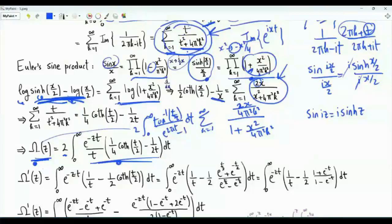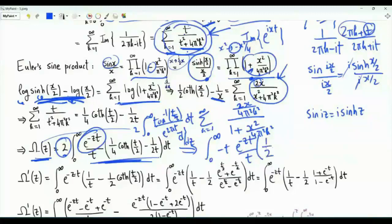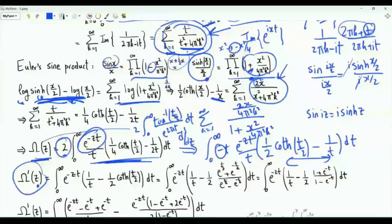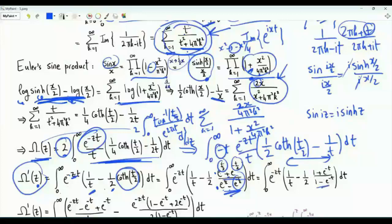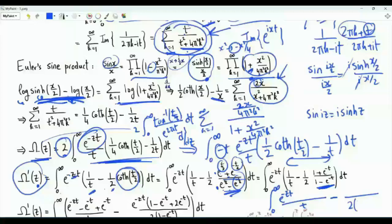The first derivative of omega with respect to z is the integral from zero to infinity of e to the minus zt times one over t minus one-half coth(t/2). Writing the hyperbolic cotangent explicitly as e to the t over two plus e to the minus t over two divided by e to the t over two minus e to the minus t over two, then multiplying numerator and denominator by e to the minus t over two, this ratio equals one plus e to the minus t divided by one minus e to the minus t. So the first derivative of omega equals the integral from zero to infinity of e to the minus zt over t minus e to the minus zt times one plus e to the minus t divided by two times one minus e to the minus t.